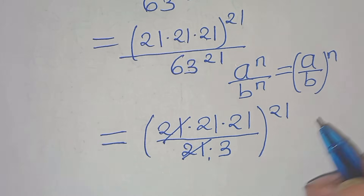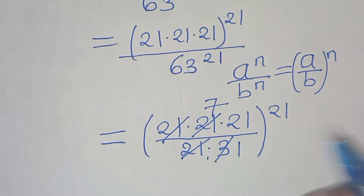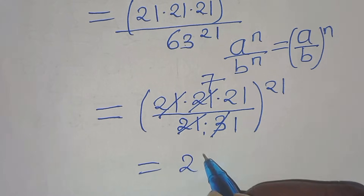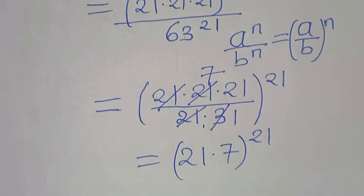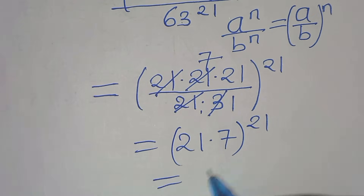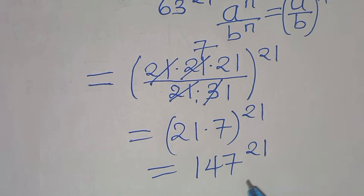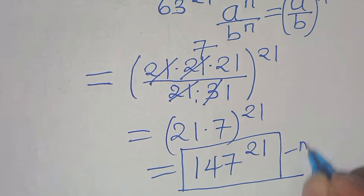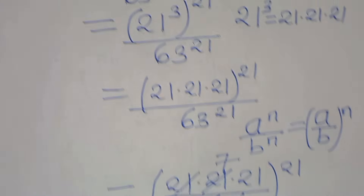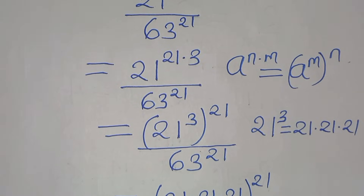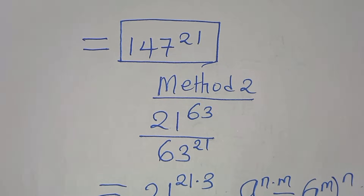We have 21 times 21 divided by 3. Again simplifying, 21 divided by 3 equals 7, and 21 times 7 equals 147, raised to the power of 21. Therefore this is the solution applying Method 2. Both Method 1 and Method 2 give the same solution. Please like this video and subscribe — see you in the next video, bye bye for now.